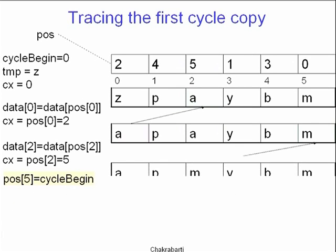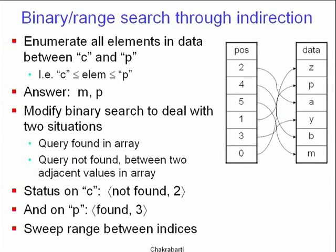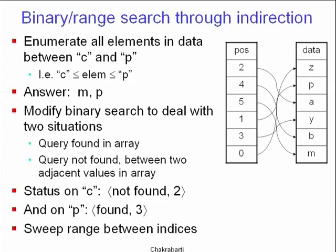Now for the use of indirection arrays. Suppose I have the data array Z, P, A, Y, B, M, and the pause array 2, 4, 5, 1, 3, 0. The pause array corresponds to those arrows — if you follow them, you recover the data array in sorted order. Suppose the problem is to enumerate all elements between C and P inclusive.